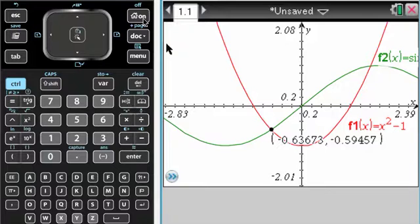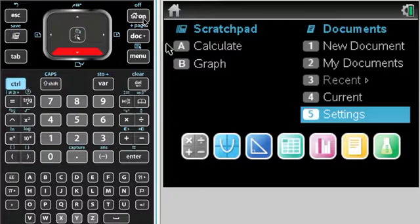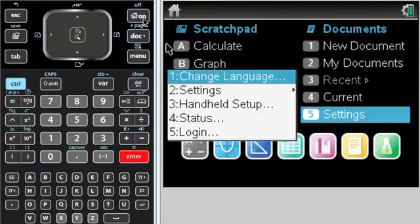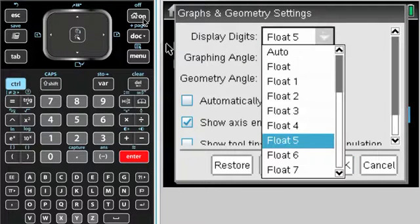What we're going to do is press the house or on, go to settings, which is 5. There's more than one way to get here, obviously. Settings, graphs and geometry, and then display digits is what you need to change.